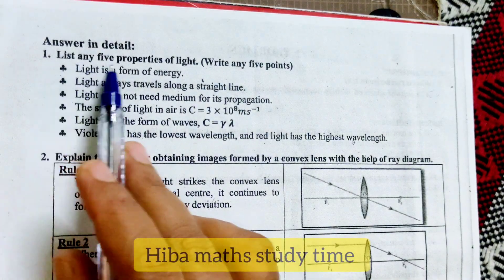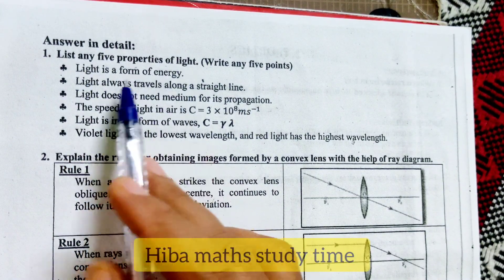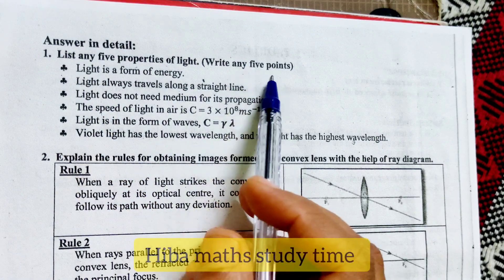Answer in detail. First question, list any 5 properties of light. So, here we are going to take a look at the next point.